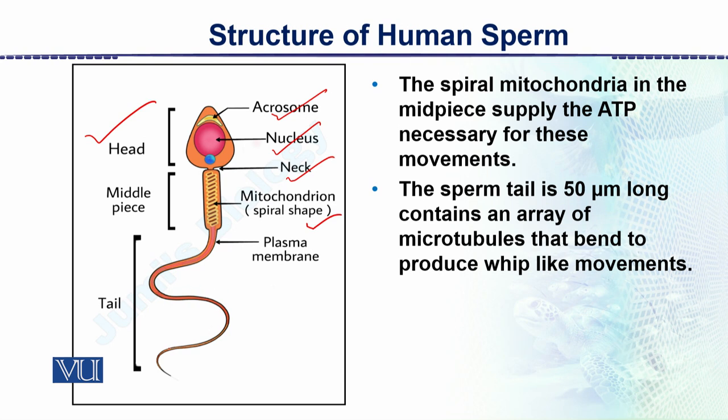The sperm is a complete single cell surrounded by a membrane, with a head, a midpiece, and a very long tail. The sperm tail is about 50 microns long and contains an array of microtubules.